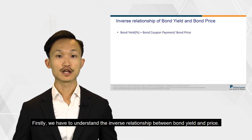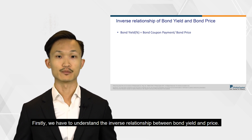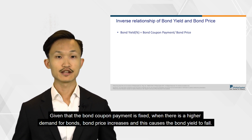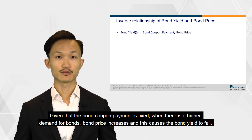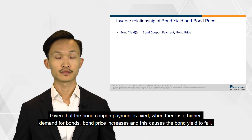Firstly, we have to understand the inverse relationship between bond yield and price. Given that the bond coupon payment is fixed, when there is a higher demand for bonds, bond price increases and this causes the bond yield to fall.